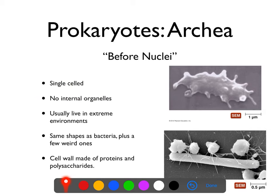Archaea are still prokaryotes. They're still single-celled and still have no internal organelles. Most — not all — but most archaea live in extreme environments: really high heat, really cold places, places with really high salt, places that are really acidic or really basic, or just weird. There's an archaea that lives in a lake in Arizona that has a hugely high arsenic content. Arsenic is a poison to pretty much all living things, but this archaea not only lives there, it incorporates arsenic into its cellular structure and makes DNA out of arsenic. We call these organisms extremophiles.